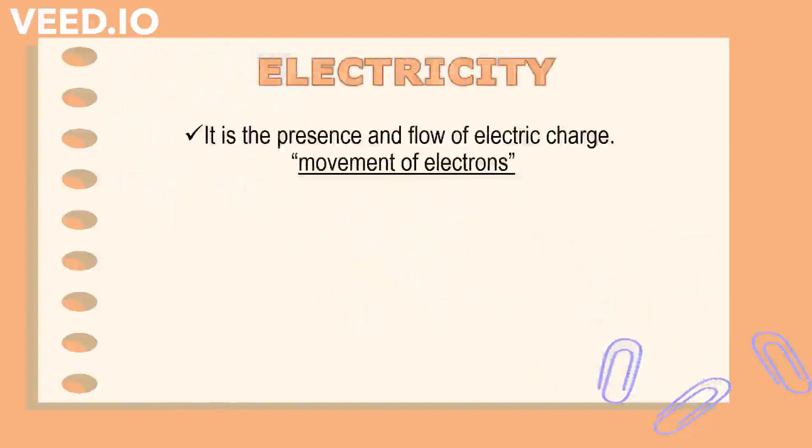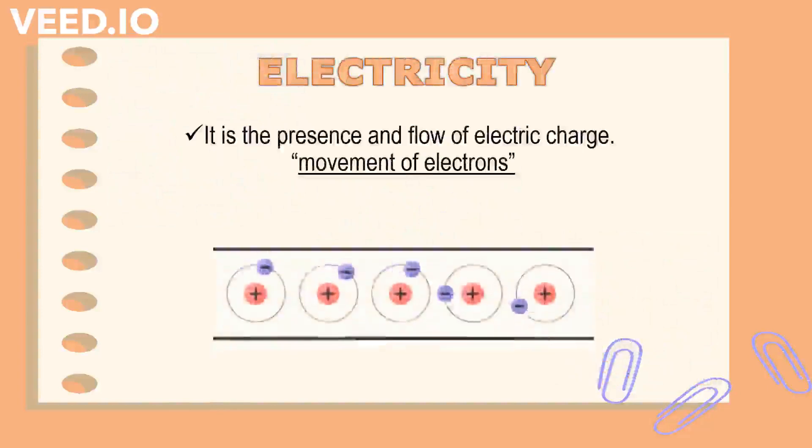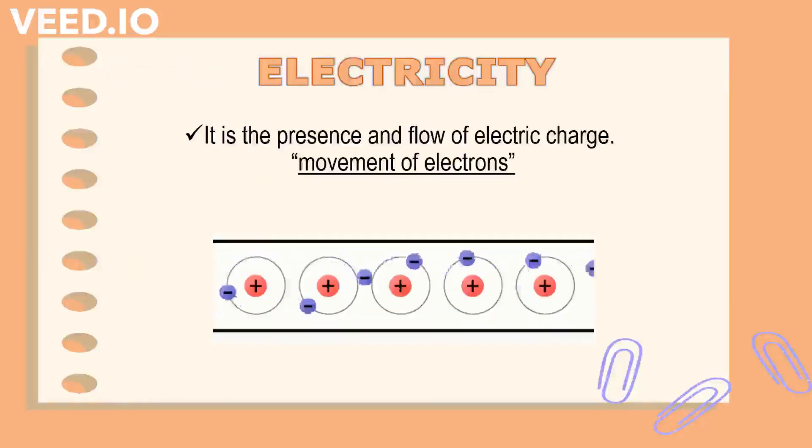Electricity is the presence and flow of electric charge or simply the movement of electrons. The movement of electrons through a device like our TV or computer is what gives the energy to display images and great sounds. Many other gadgets and machines all harness the movement of electrons to do work through electricity.